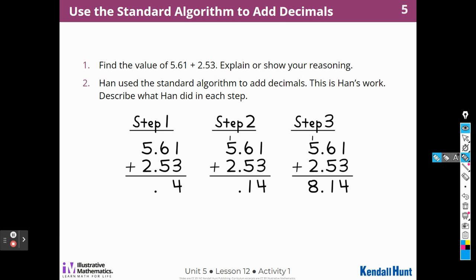I'm going to do number 1 first by adding 5.16 and 2.53. So 1 plus 3 is 4. 6 plus 5 is 11. I'm going to have to carry over a 1 and bring down my decimal. 5, 6, 7, 8. 8.14. Well, we got the same answer, Hahn and I.